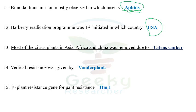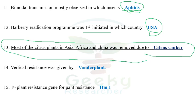The next question: most citrus plants in Asia, Africa, and China were removed due to — I'm not sure of the answer. The options given seem to include citrus canker, citrus tristeza virus, and citrus greening. Citrus canker seems to be a reliable answer, but one of my friends said citrus greening may also be responsible for the eradication of millions of plants in Asia and Africa. I'm not sure — if you know, comment below.